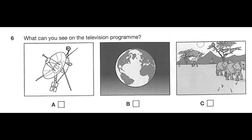Coming up next on the Science Channel is the latest documentary produced and presented by photographer Daniel Hamilton, who made the prize-winning series about African animals, which you may have seen last year. His latest series is simply called Earth, and viewers can enjoy some amazing photography, with pictures of the planet shot from cameras in space using the latest satellite technology. So sit back, relax, and enjoy.